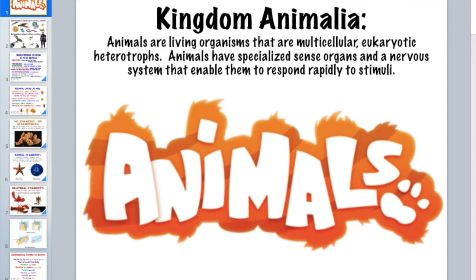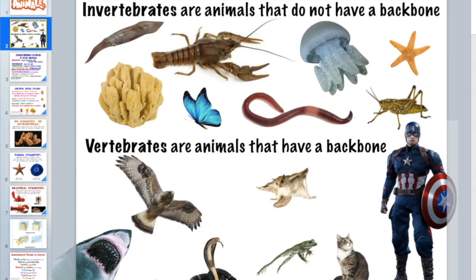Animals do not have a chloroplast, so they must eat other things. You need to be aware of specialized sense organs that animals have. They have a nervous system like a brain and spinal cord, but some basic animals will have more of a nerve net, like a jellyfish.